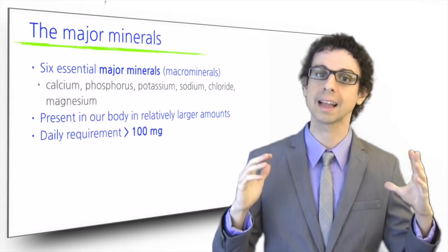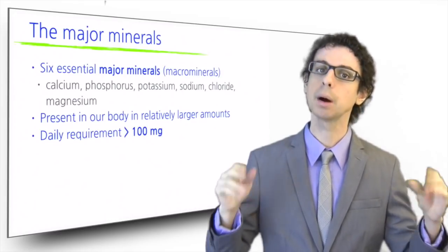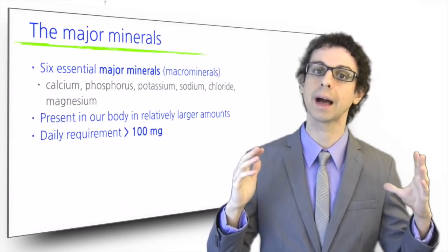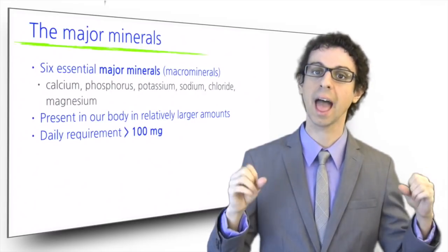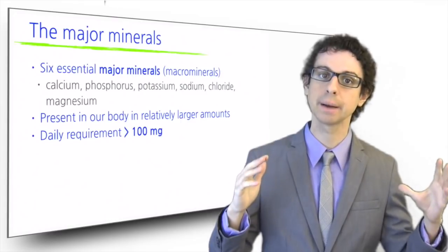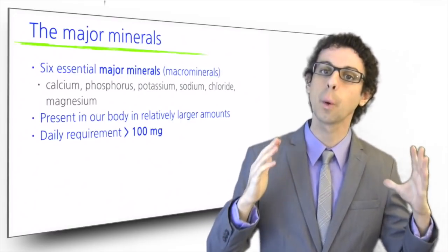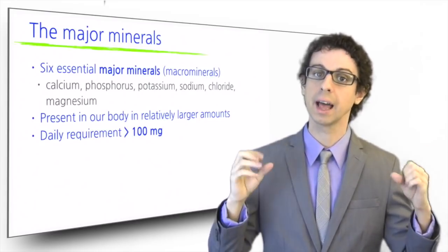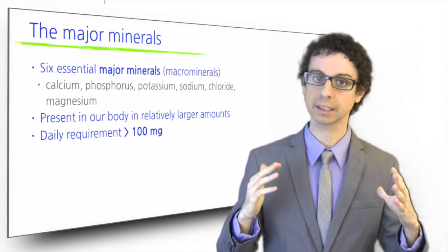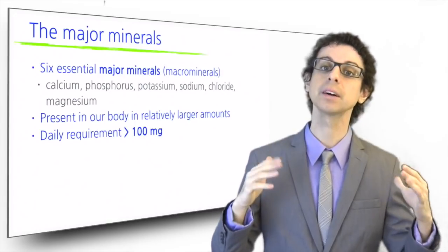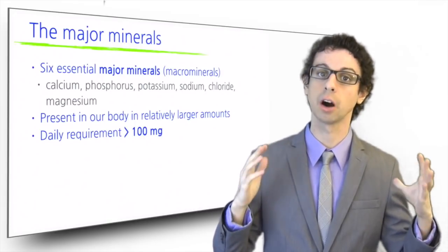Sulfur is sometimes classified as a major mineral, but we only need it as part of the amino acids methionine and cysteine, and the B-group vitamins thiamine, biotin, and pantothenic acid. Thus, we do not have a requirement for sulfur per se, and as long as our protein and B-vitamin requirements are met, our need for sulfur is also covered.